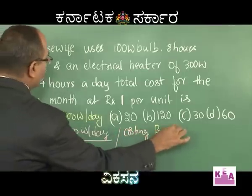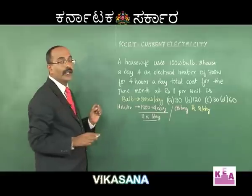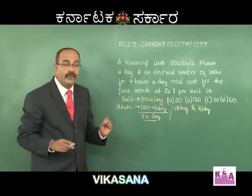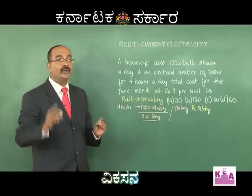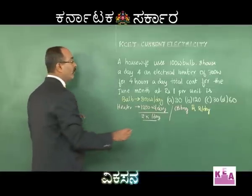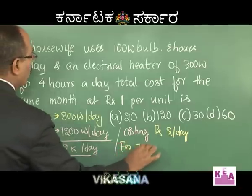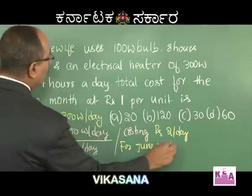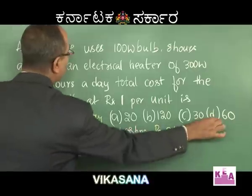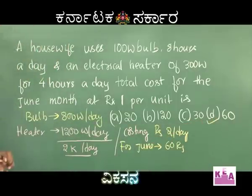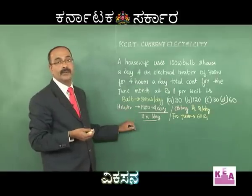June month has 30 days, therefore for the full month the total cost will be 2 × 30 = 60 rupees. So option D is correct. It's a very simple problem.